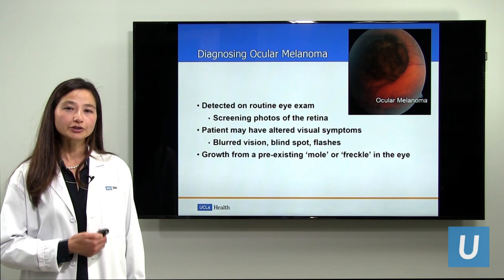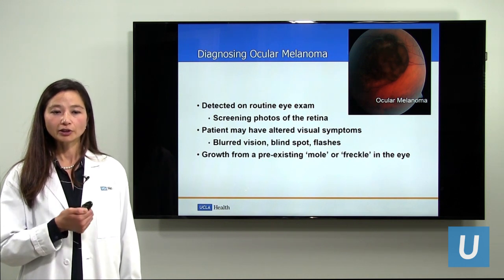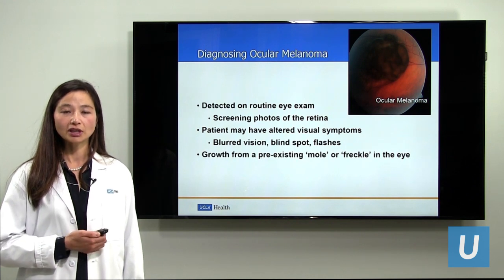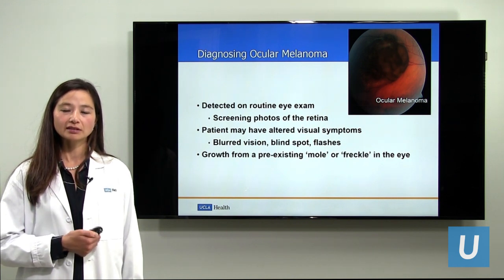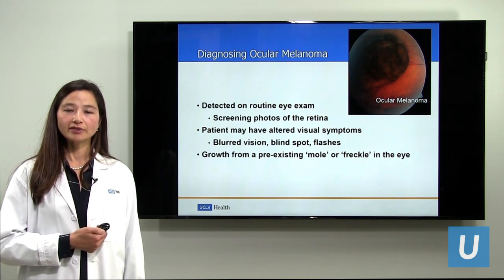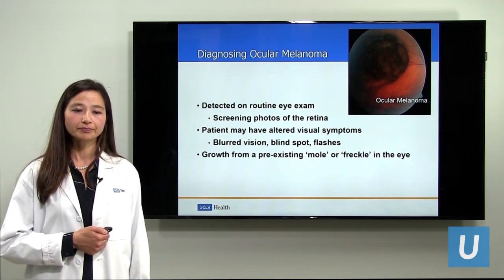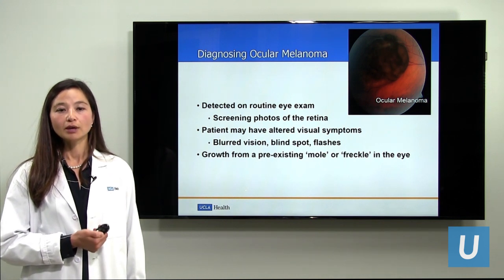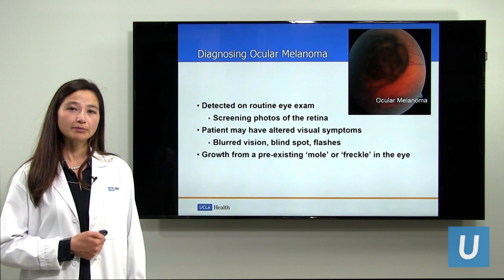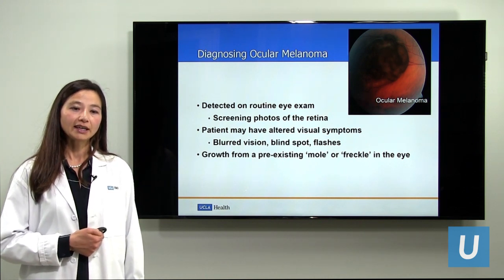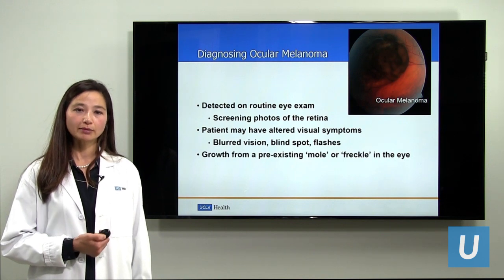A patient may also have altered vision that brings them to an eye care provider. If the tumor is developing in an area close to the center of vision, this can cause a decrease in vision. A person might also notice a blind spot that is more apparent and persistent, or some flickering and light sensations, which can signal a choroidal melanoma. It is important to realize, however, that numerous more benign conditions of the retina can be responsible for these symptoms. Finally, a person may know they have a freckle or nevus in their eye, and occasionally these can transform into a melanoma, just like an unusual freckle on the skin may become a skin melanoma.